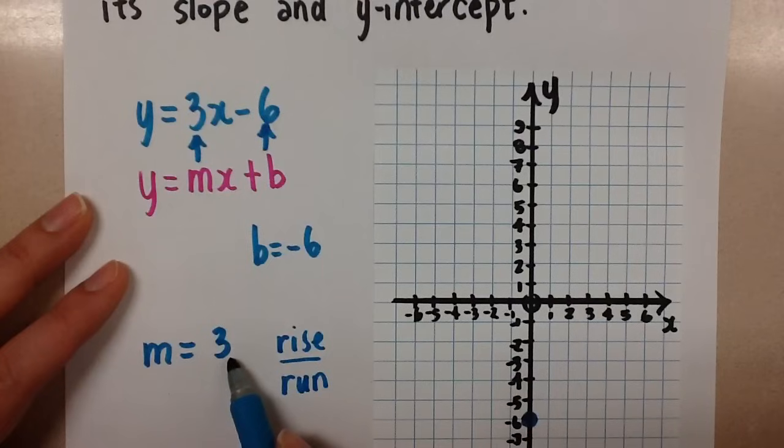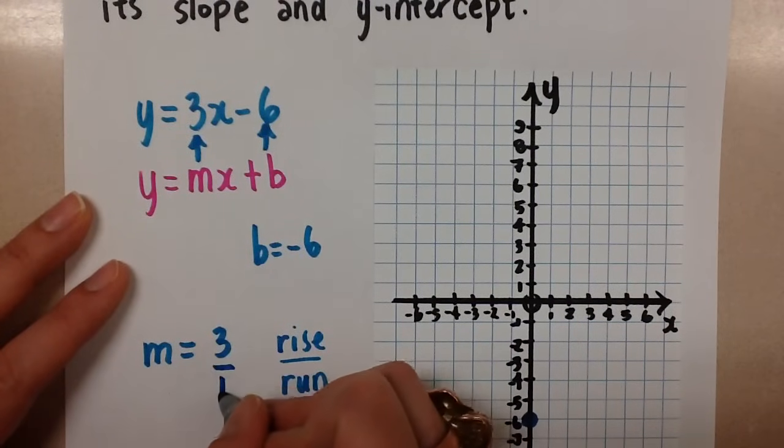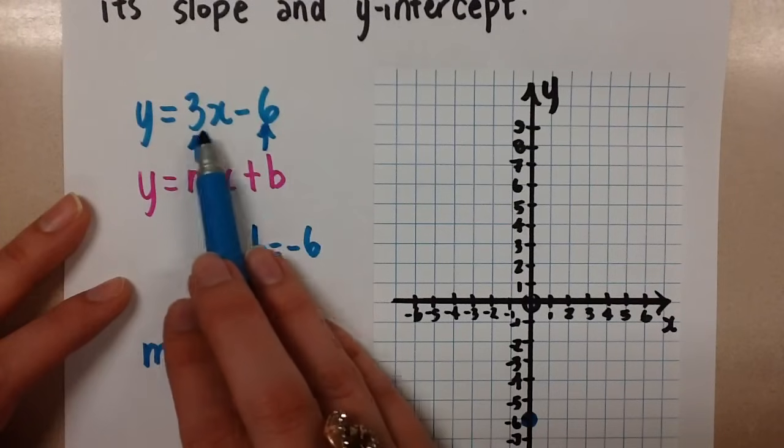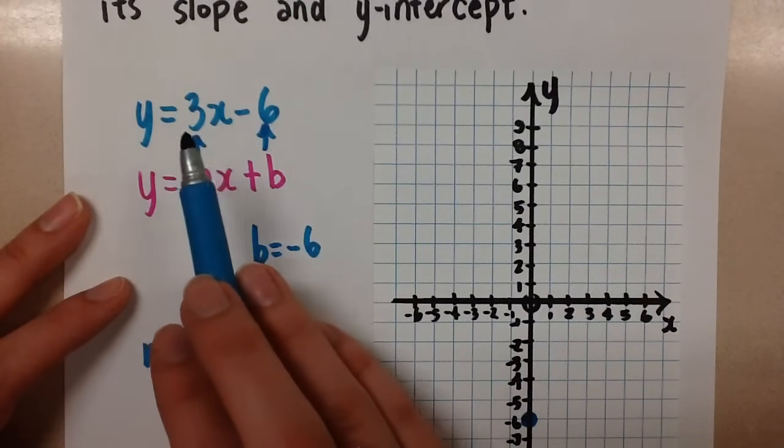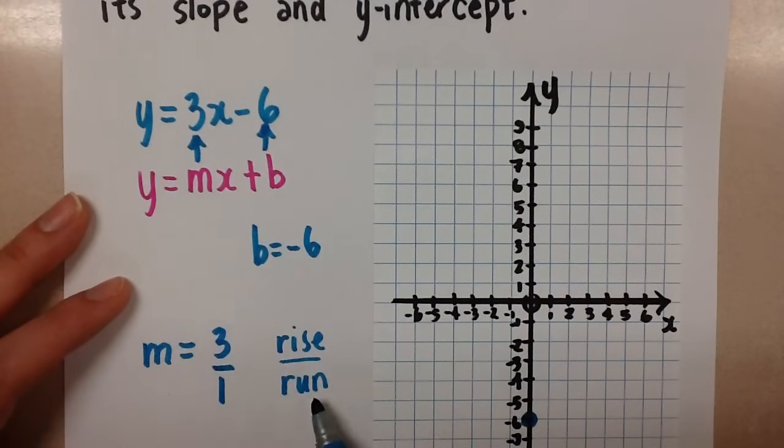So we have the 3 here. Let's force it into a fraction by doing 3 over 1 like this. This doesn't change the value. If you already had a fraction for your slope, you would use the numerator for the rise and the denominator for the run.